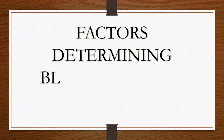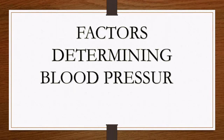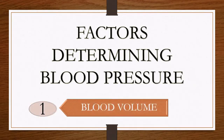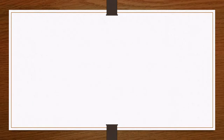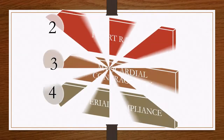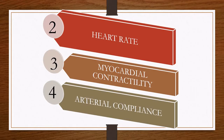Let's see the factors that determine blood pressure. The first one is blood volume. You might wonder: what if blood volume is too much — will it lead to high or low blood pressure? What if blood is very little? The second, third, and fourth factors are heart rate, myocardial contractility, and arterial compliancy.